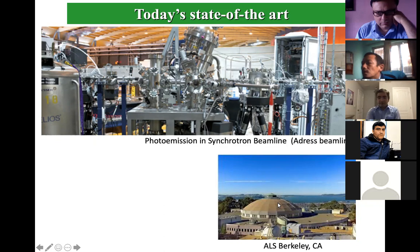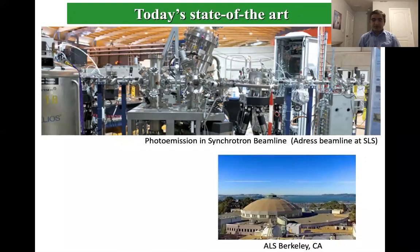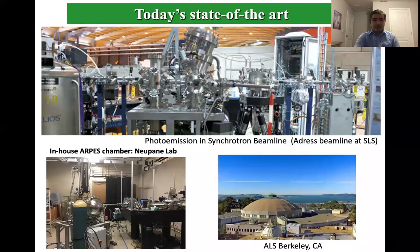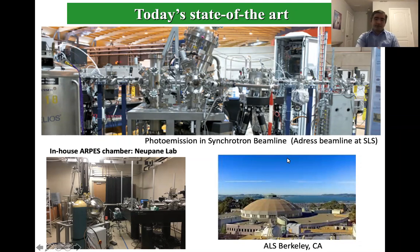We go to the beamline because it has a couple of advantages: bright light source and tunable photon energy - you can tune to whatever energy you want. But we can also do measurements in-house. The difference between going to a national lab and in-house is that at the national lab you have bright, tunable photon sources, while in the lab you are limited. In my lab at UCR I have a helium lamp providing either 21 eV or 42 eV. At the national lab you can get whatever photon energy you want.